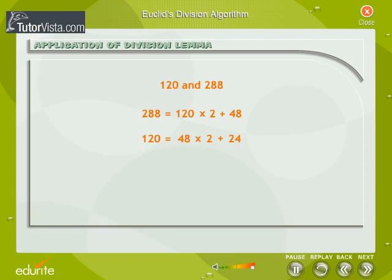So we apply the division lemma to 120 and 48. The remainder 24 is not equal to 0.